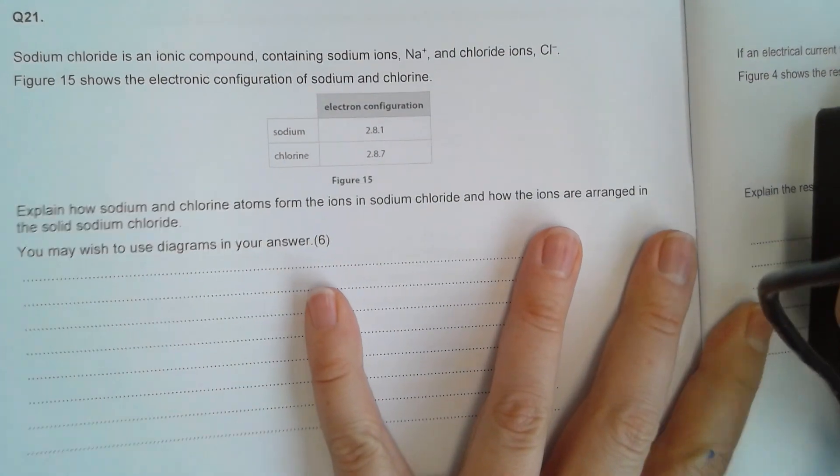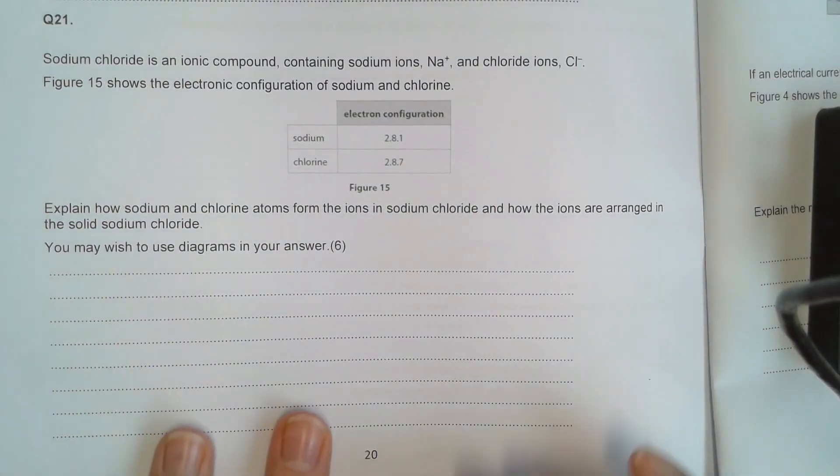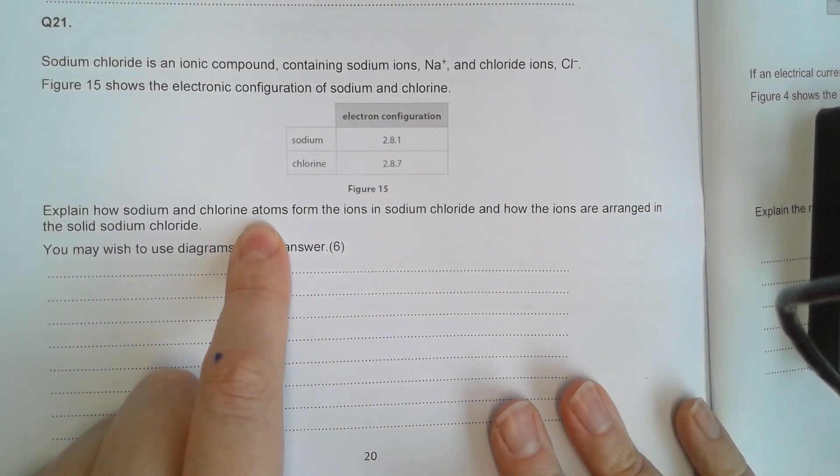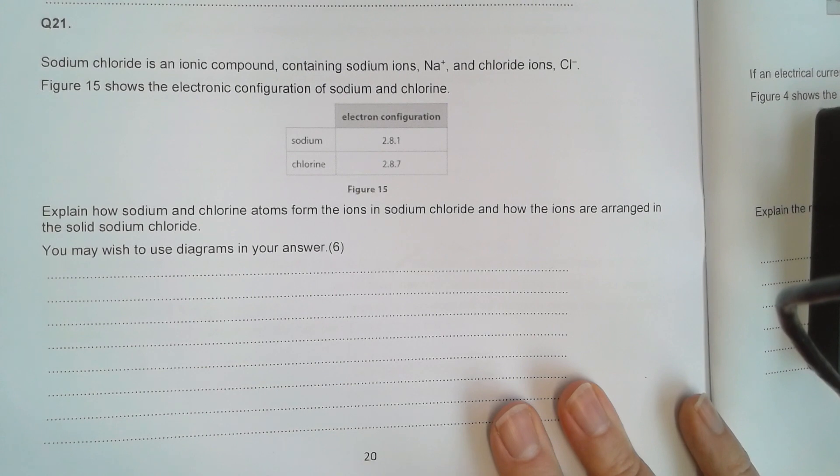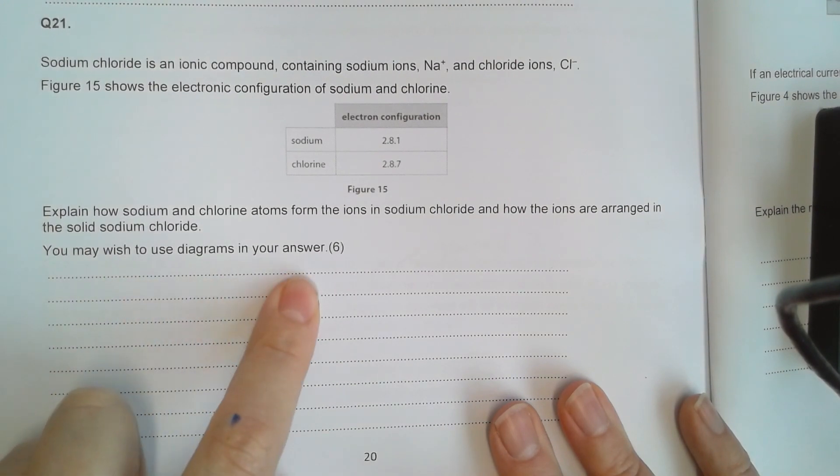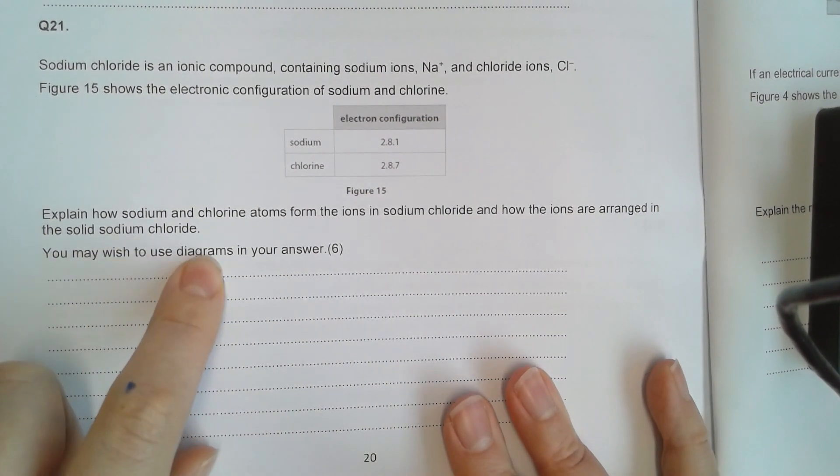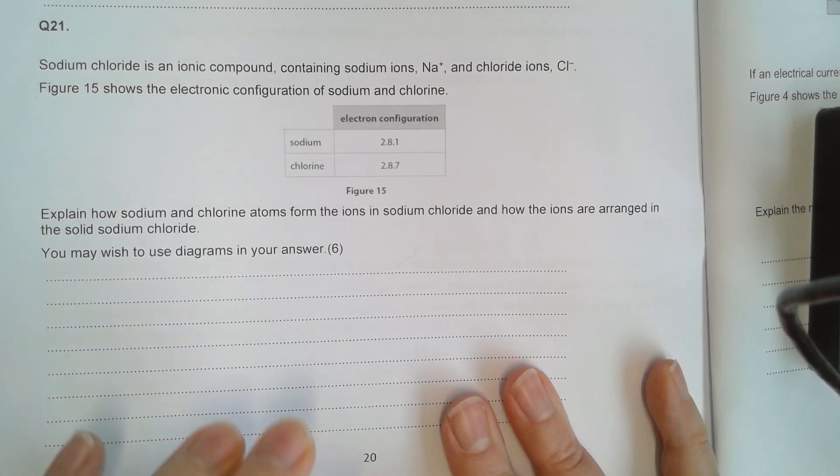I'll do the six marker, but I think it's quite a straightforward one. Explain how sodium and chlorine atoms form the ions in sodium chloride and how the ions are arranged in the solid. You may wish to use diagrams. Even if they don't tell you to use diagrams, do, because you will get your marks for them.